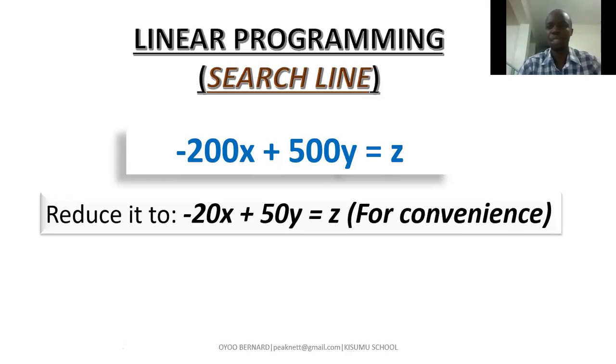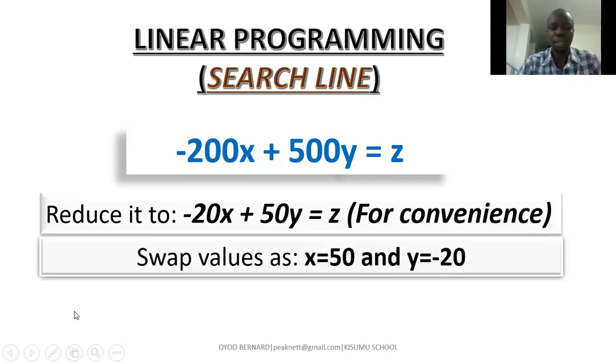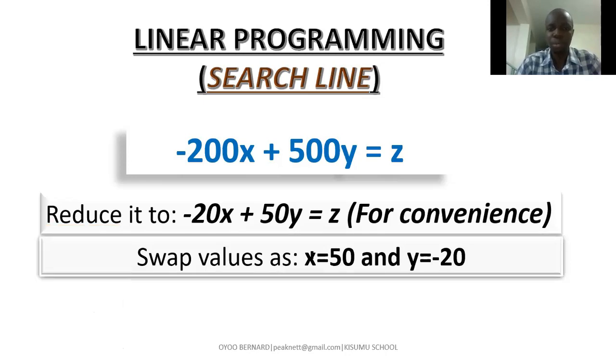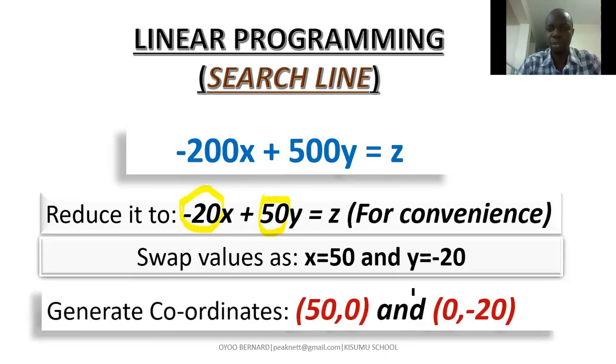Now, as you can see down here, for us to get at least two points that will enable us to draw the search line, all we need to do is very simple. Just swap the values of the coefficients of x and y. In this case, for x, take 50. So we'll take 50 here for x. And then for y, we take -20. Now, the two values will be used to generate the coordinates, which in this case will now be x is 50.